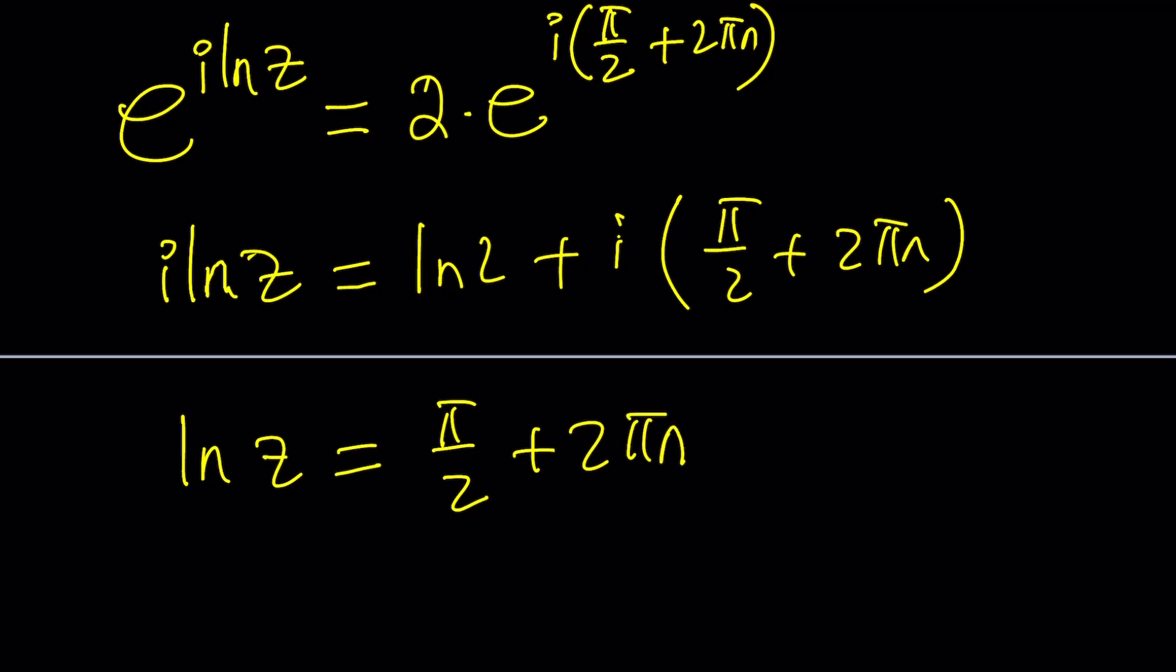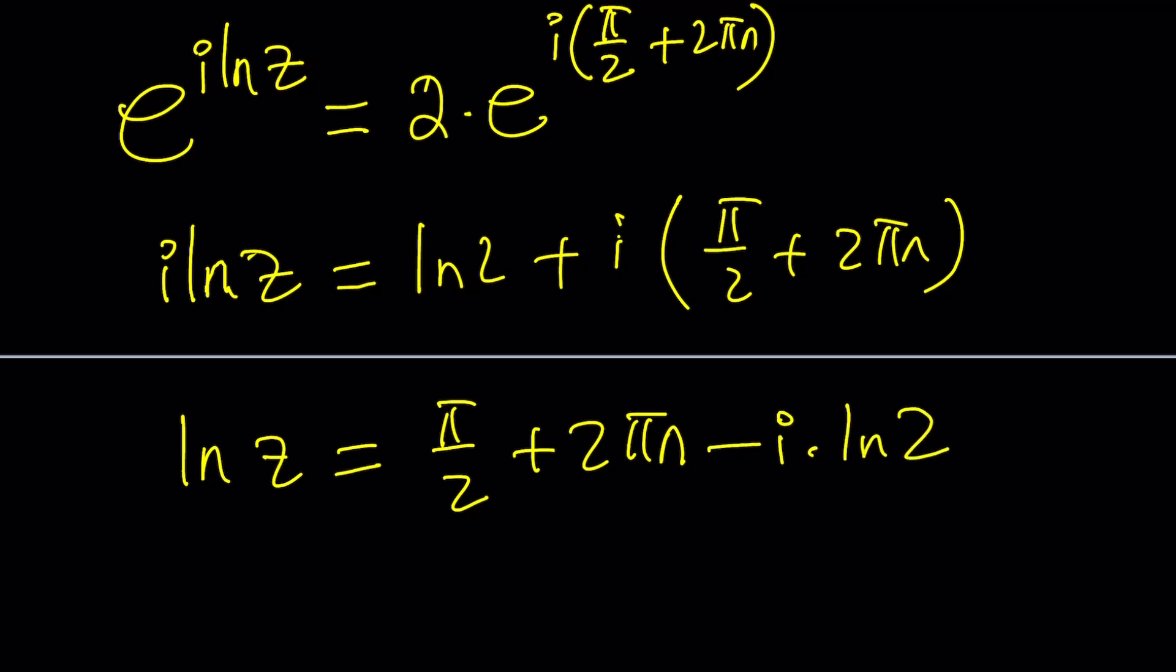Pi over 2 plus 2 pi N. And then LN2 is going to be multiplied by negative I. So it's going to be negative I times LN2.